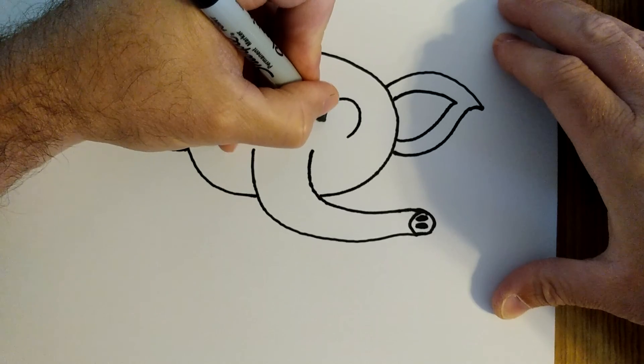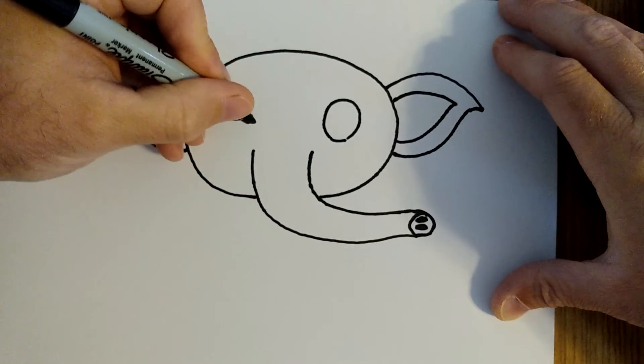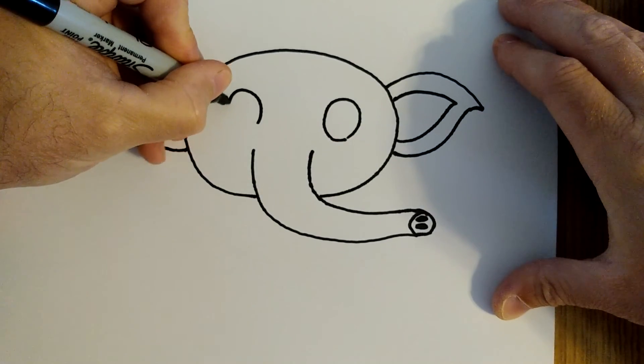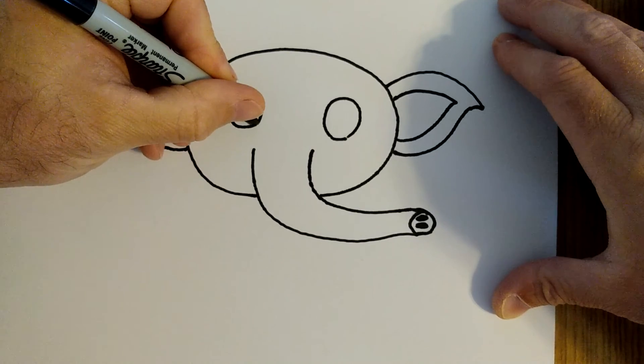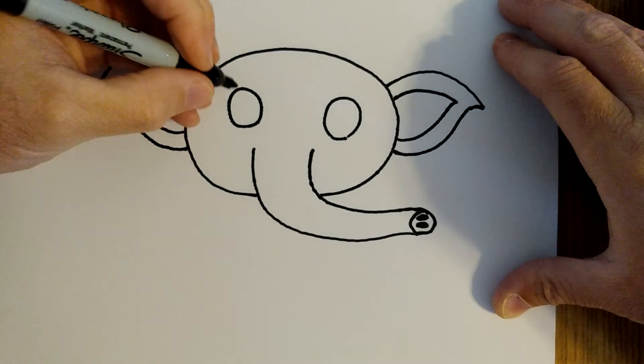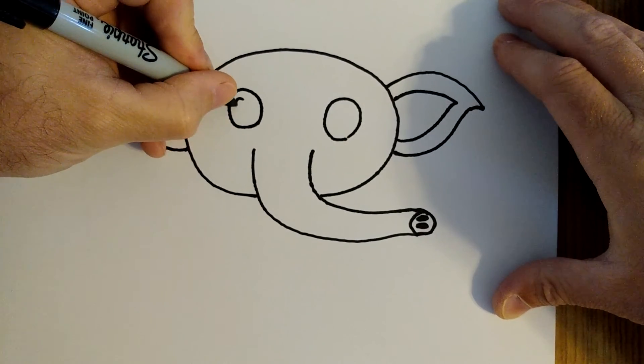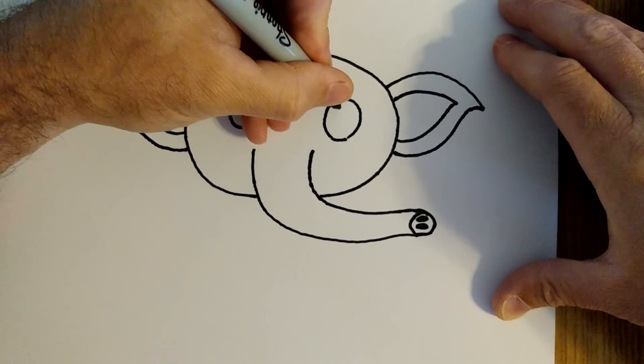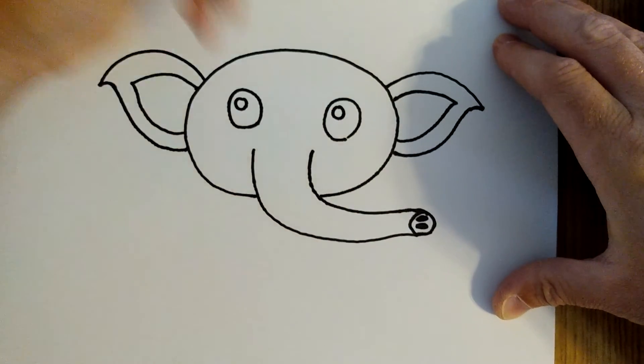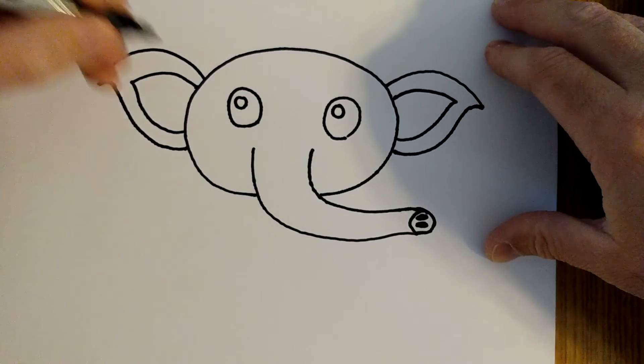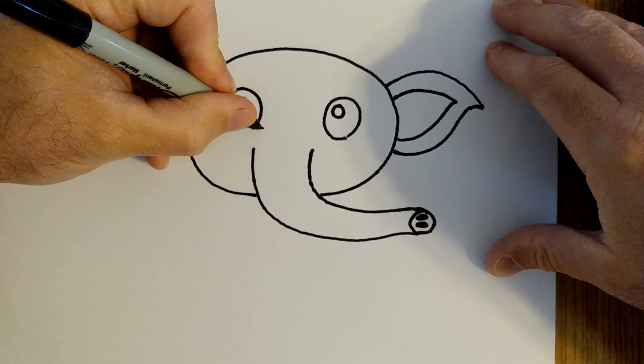I'm going to give them two circles for eyes, and I'm going to make a smaller circle inside, which once again will look better when we color that.